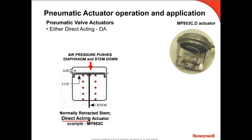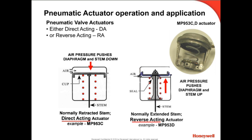We will control either valve type with either a direct acting or reverse acting actuator, which will then give us our final control configuration. Air pressure on the diaphragm of the direct acting actuator will push the actuator stem down, compressing the spring and extending the stem. As air pressure is removed, the spring will retract the stem. Thus, the normal position is stem retracted, listed as a normally retracted stem actuator or direct acting. Conversely, air pressure on the diaphragm of the reverse acting actuator will push the actuator stem up, compressing the spring while retracting the stem. As air pressure is removed, the spring will extend the stem back out. Thus, the normal position is stem extended, listed as a normally extended stem actuator or reverse acting. Note there is no valve in this diagram, so there is no normally open or normally closed discussion possible at this point.